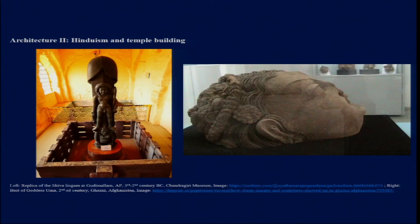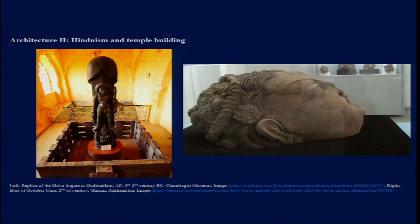The fencing surrounding the Gudimallam figure bears high resemblance to fencing seen at Sanchi and Bharhut. The details — the ornaments, the expression of the face and body — all bear close resemblance to those at Sanchi and Bharhut. This is a reminder that even though we are talking about different religions, artistic expressions are not distinct from each other. One religion would borrow from another, and there are always transactions and exchanges between religions.